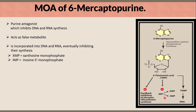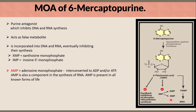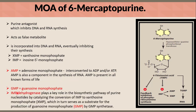When it comes to AMP, or adenosine monophosphate, it is interconverted to ADP or adenosine diphosphate, or ATP or adenosine triphosphate. AMP is also a component in the synthesis of RNA and is present in all known forms of life.